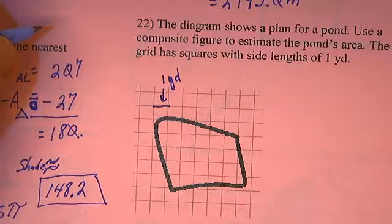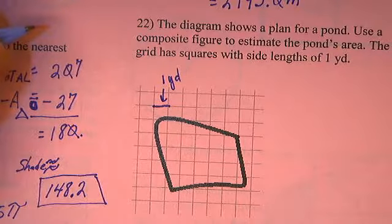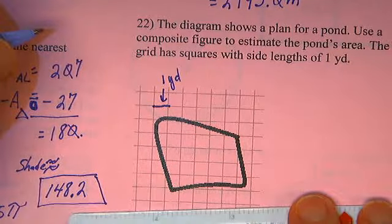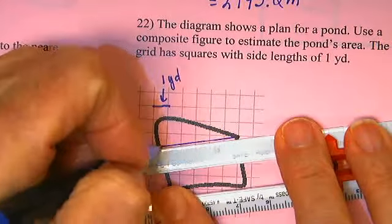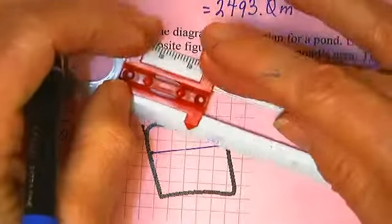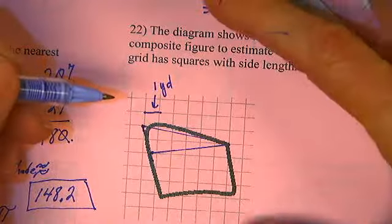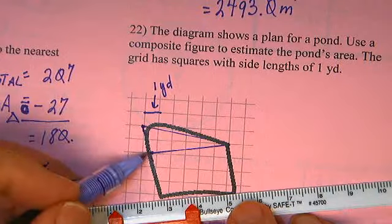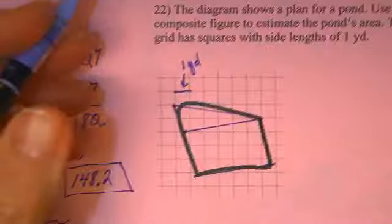How on earth am I going to draw this puppy? Let me think. You know what I think I'm going to do? I think I am going to make this a triangle and I am going to make this a rectangle.